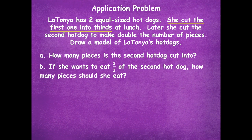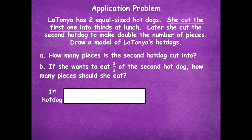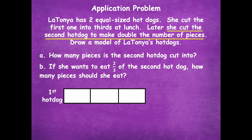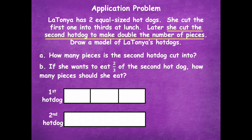First we're going to look at: she cut the first one into thirds. So here's my first hot dog — she cut it into thirds, so we have three equal parts. The next part says she cut the second hot dog to make double the number of pieces. So here's my second hot dog. She had thirds, but she made double, so that means we have to cut each piece into two. Now I have double — the first hot dog is three parts, and the second hot dog is six parts. So we doubled our unit.